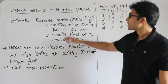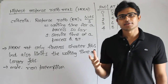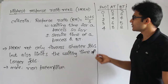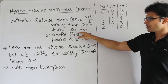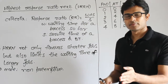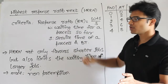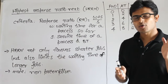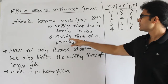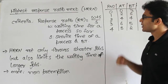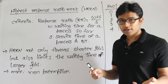Highest Response Ratio Next - the name itself says we are going to find something called the response ratio, and whichever process has the highest value we are going to pick. The response ratio is: waiting time plus service time, divided by service time. W is the waiting time so far at the point of computation, and S is the service time or burst time.